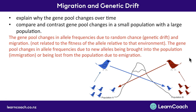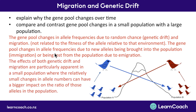Now let's compare and contrast changes in a small population with a large population. The effects of both genetic drift and migration are particularly apparent in a small population, where one small change can have a really big impact on the ratio of alleles. For example, one red bird leaving changes 20% of the whole allele base of the population. So: small population, big change. And that is migration and genetic drift.